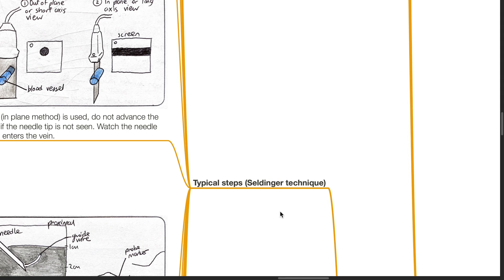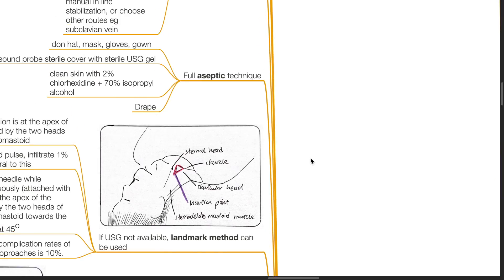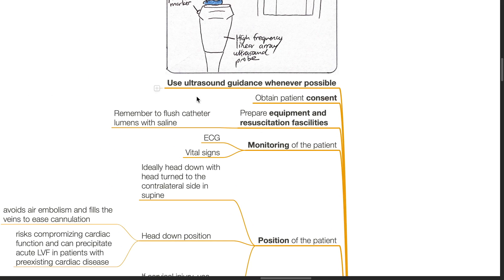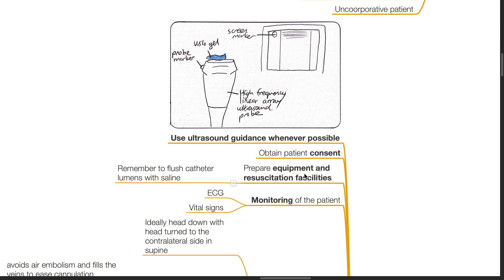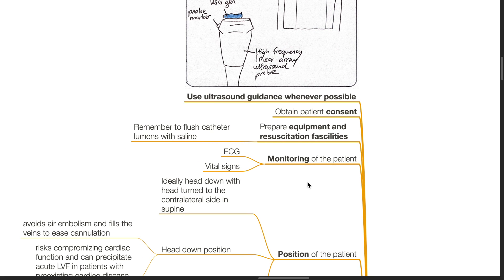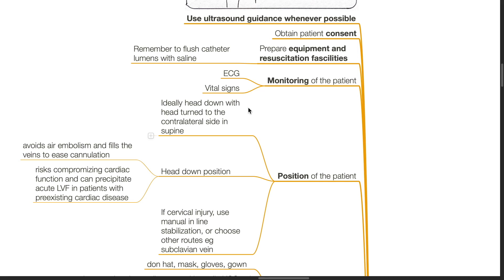Typical steps of the Seldinger technique — catheter over guide wire insertion. Use ultrasound guidance whenever possible, such as a high-frequency linear array ultrasound probe. Obtain the patient's consent, prepare equipment and resuscitation facilities, and remember to flush the catheter lumens with saline. Monitor the patient with ECG and vital signs. Position the patient ideally head-down with the head turned to the contralateral side to distend the vein. The head-down position avoids air embolism and fills the vein to ease cannulation.